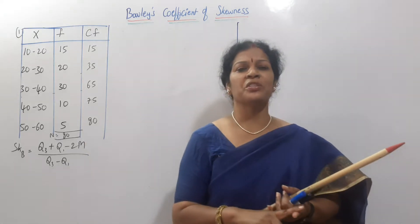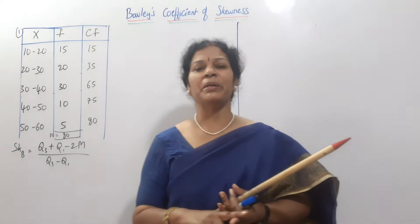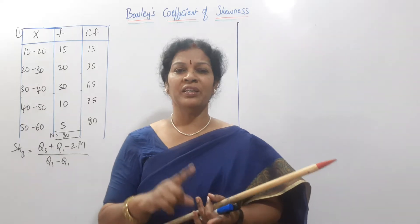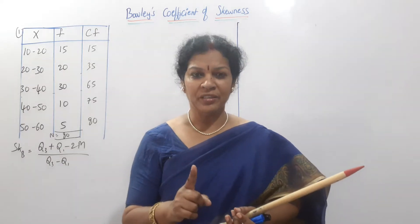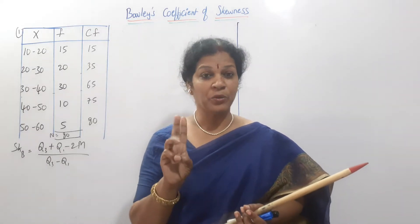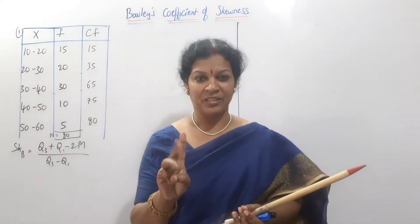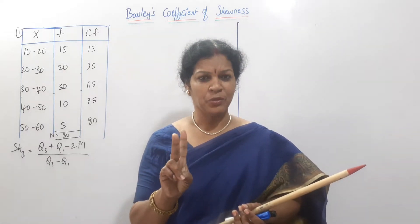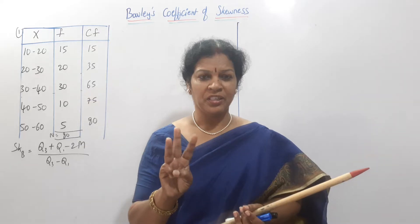Bowley's coefficient of skewness mainly depends on the data: Median, Quartile 1, and Quartile 3 — that is M, Q1, and Q3. These three values are needed for the calculation.